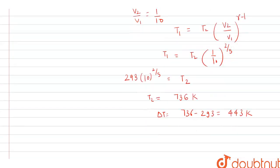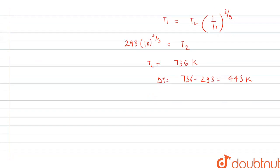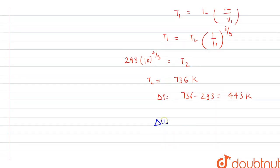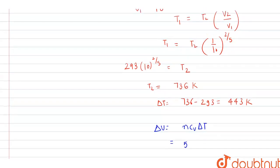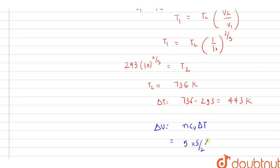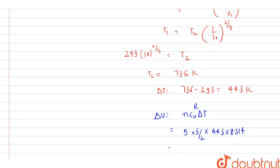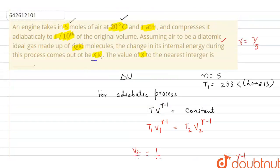Now we find the change in internal energy. The formula is ΔU = n·Cv·ΔT. For a diatomic gas, Cv = (5/2)R. So ΔU = 5 × (5/2) × 8.314 × 443. On solving, this comes out to be approximately 46 × 10^3 J, which equals 46 kilojoules. Therefore, x = 46 is our answer.